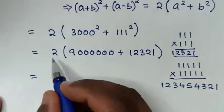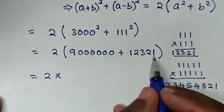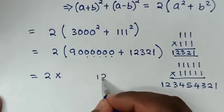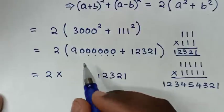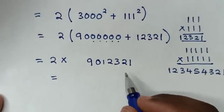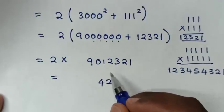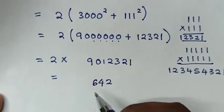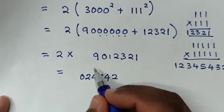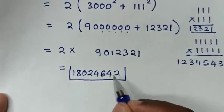So it will be equal to 2 times (9,000,000 plus 12,321). Computing 2 times 12,321: 1 times 2 is 2, 2 times 2 is 4, 3 times 2 is 6, 2 times 2 is 4, 1 times 2 is 2, 0 times 2 is 0, then 9 times 2 is 18. Therefore, this is the correct answer for this problem.